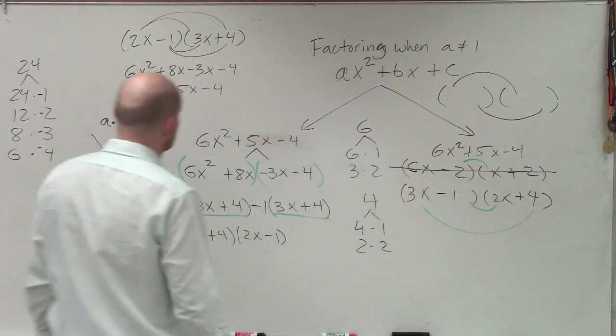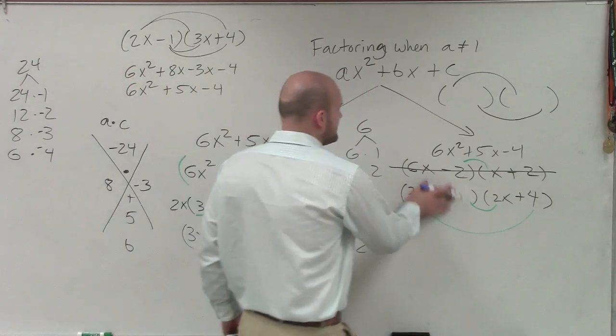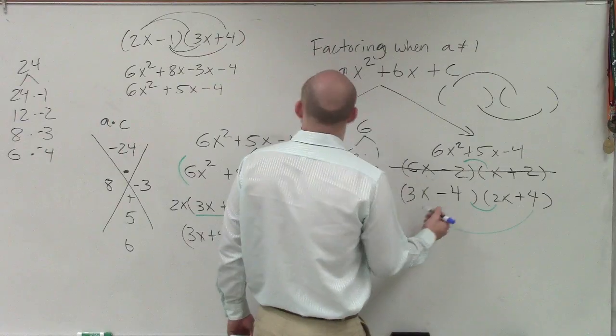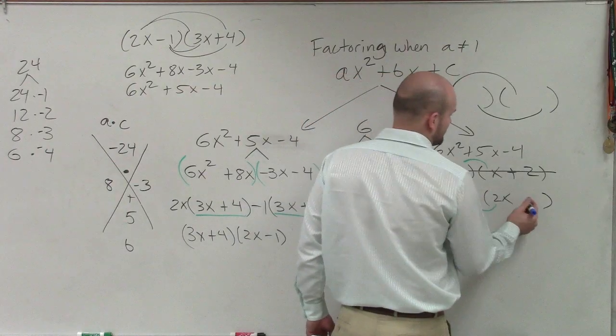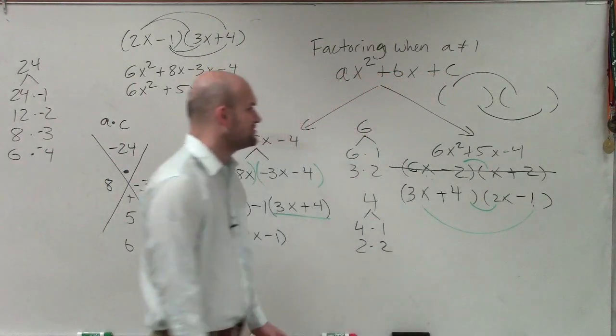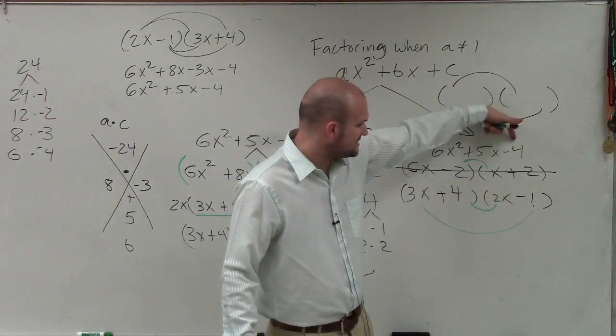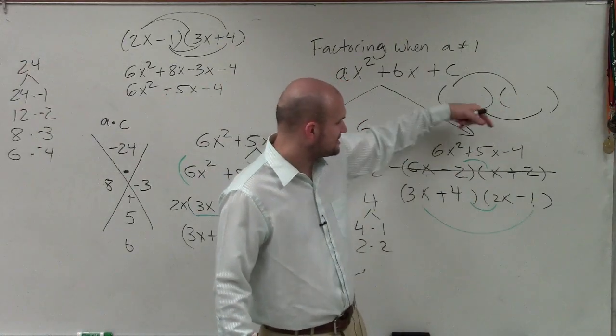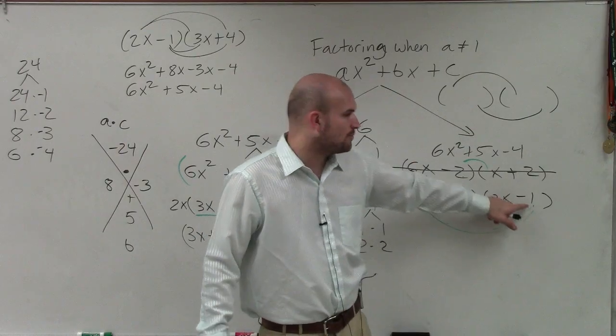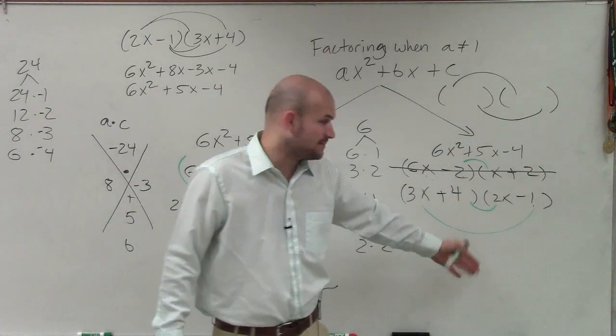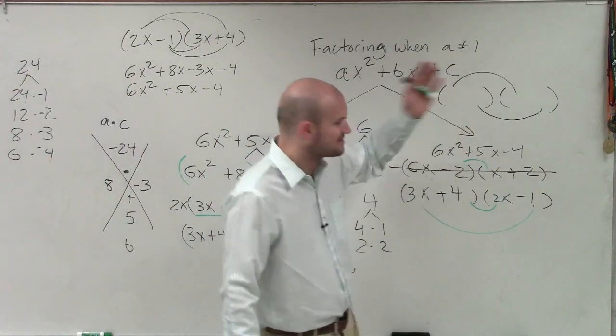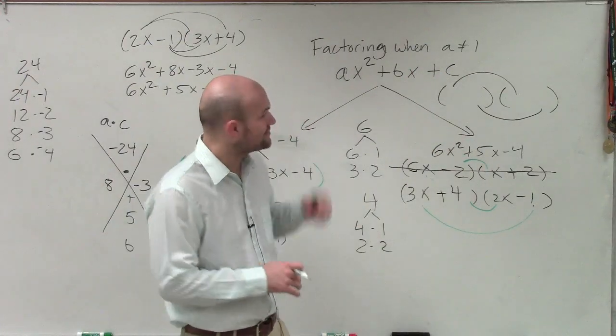However, if I swap 3x plus 4, obviously minus 1, you can now see that 3x times 2x is 6x squared. 4 times negative 1 is negative 4. 4 times 2x is 8x. 3x times negative 1 is negative 3x. 8x minus 3x is 5x, a positive 5x. And there you go. There's our solution.